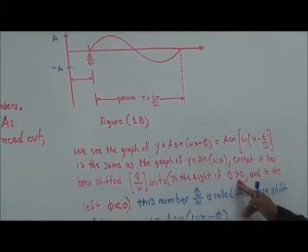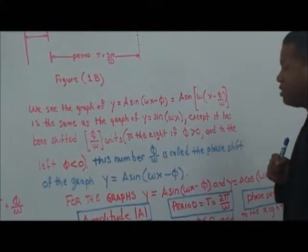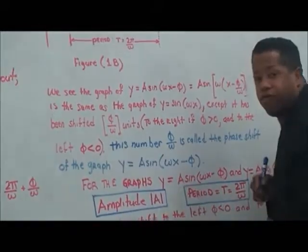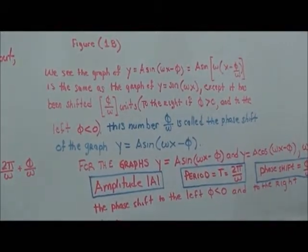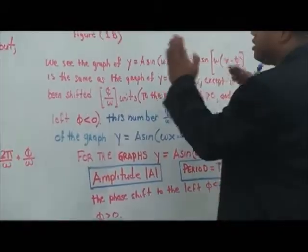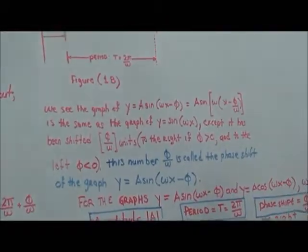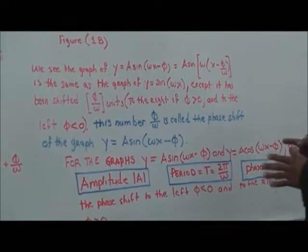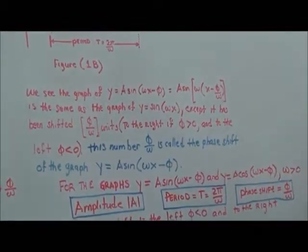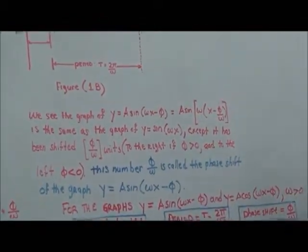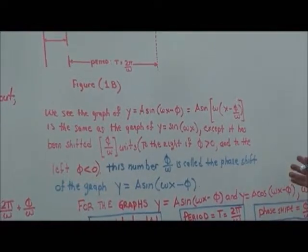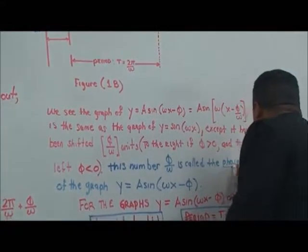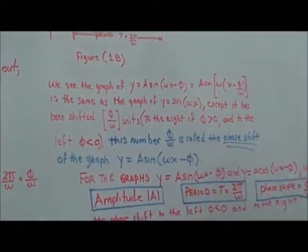If φ is greater than zero, the shift is to the right. If φ is less than zero, it shifts to the left. In this case, the graph is being shifted to the right, so φ is greater than zero. This number φ/ω is called the phase shift of the graph.